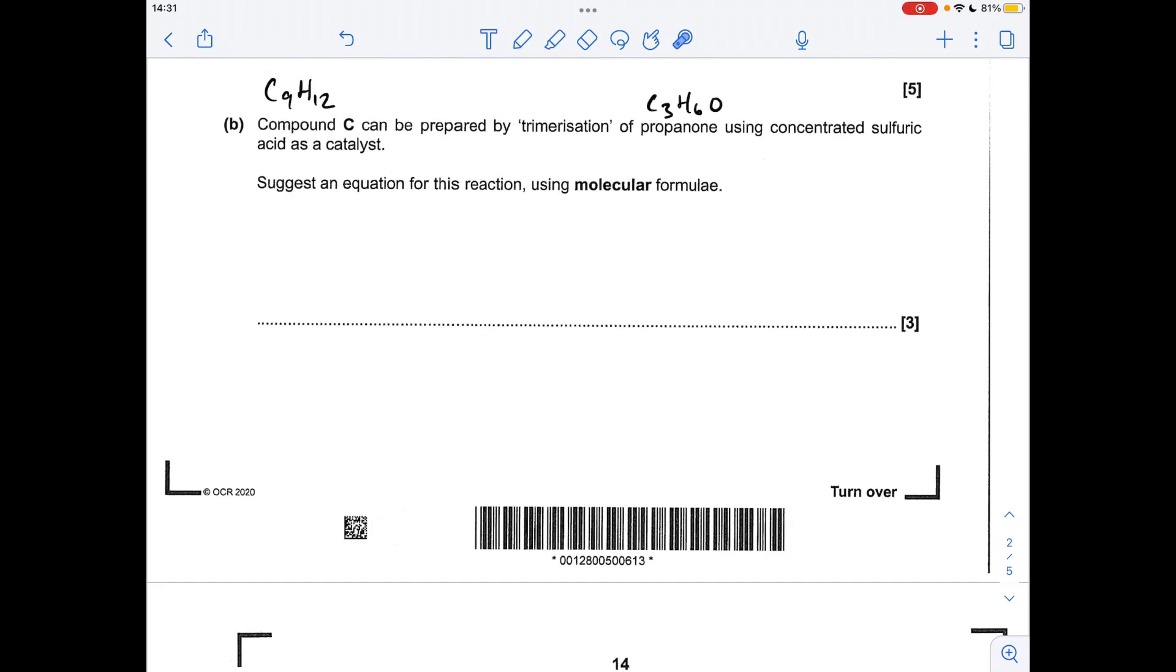Part B, we've got this unfamiliar reaction we've got to try and work out. Compound C can be prepared by trimerisation, so that's the combining of three molecules, so three propanones are being combined to make compound C. There's the beginnings of the equation, all we need to do now is sort out the remaining atoms. You can see we've got six hydrogens too many on the left and three oxygens, so the other product must be H2O and we need three of them to balance the equation.